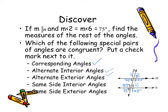Next we have same side interiors — angles 4, 5, 3, and 6. They're not congruent, but they are supplementary. And the same side exterior, looking at 1 and 8 — once again, these are supplementary. So we have the first three angle relationships that are congruent, and then the last two are supplementary.